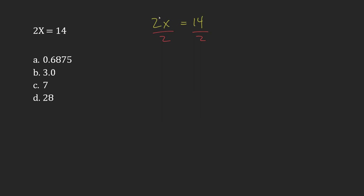And so the 2s cancel, which leaves me just with x equals whatever the result is here. So 14 divided by 2, that gives me 7.